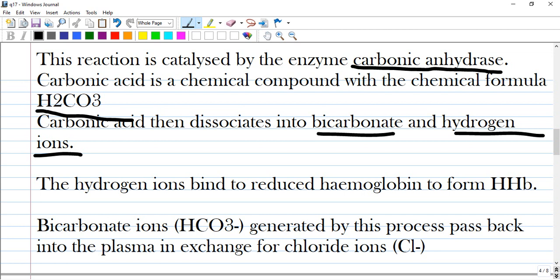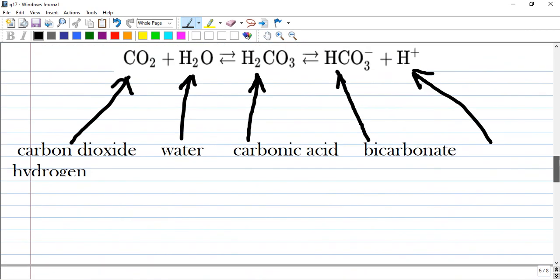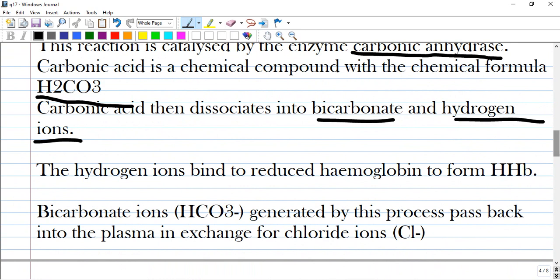Bicarbonate ions generated by this process pass back into the plasma in exchange of chloride ions. Let me see this slide. So it's about hemoglobin.